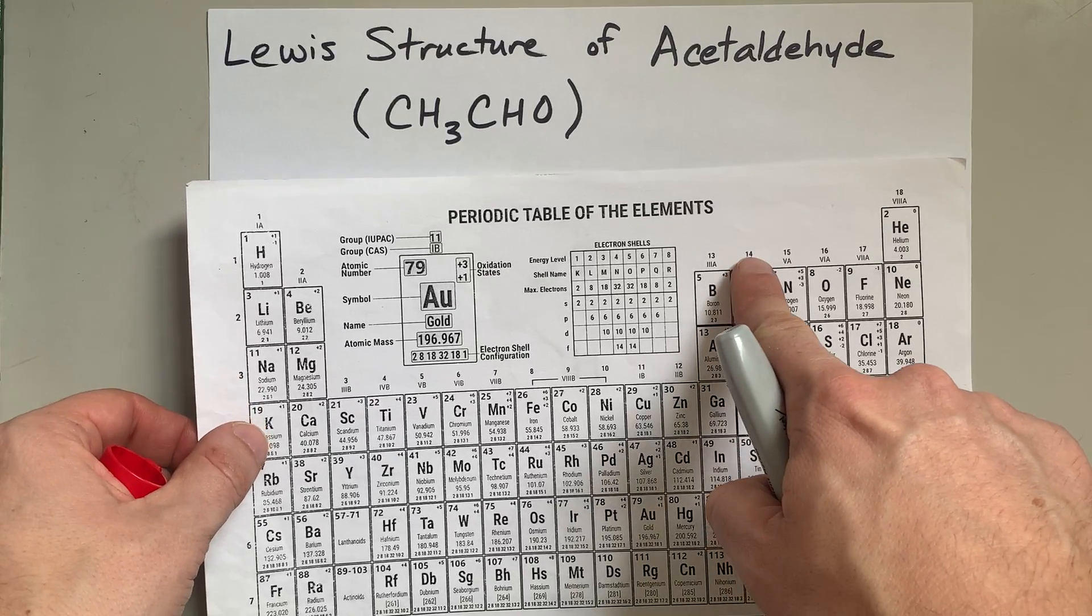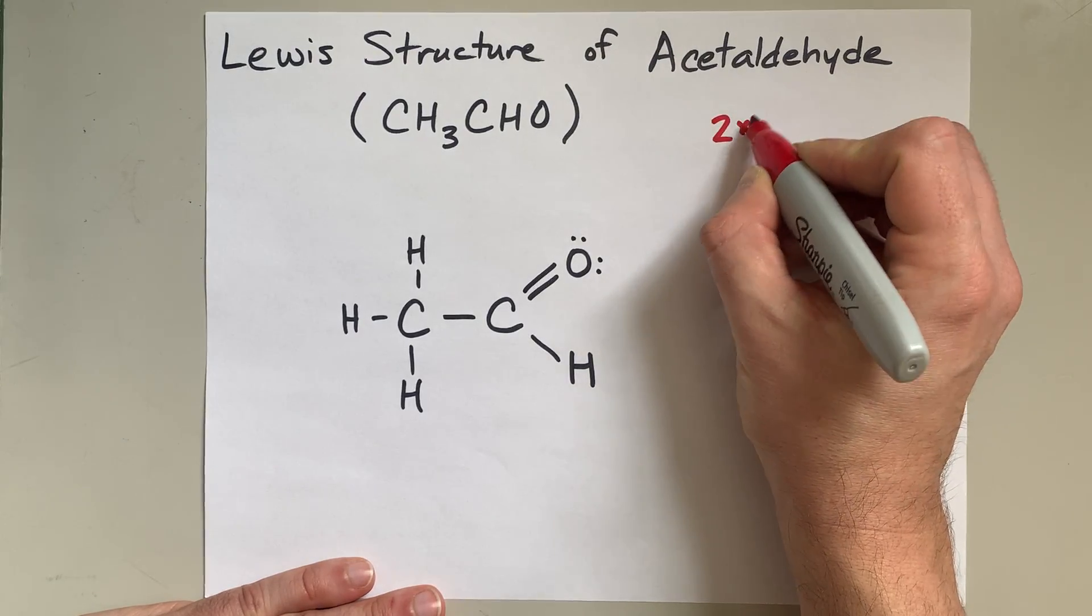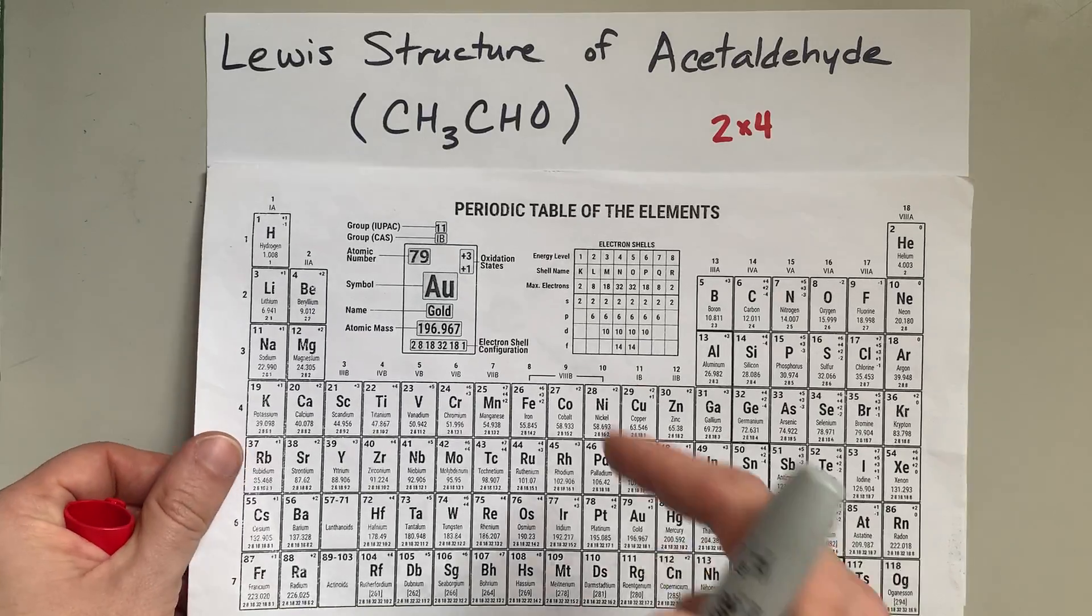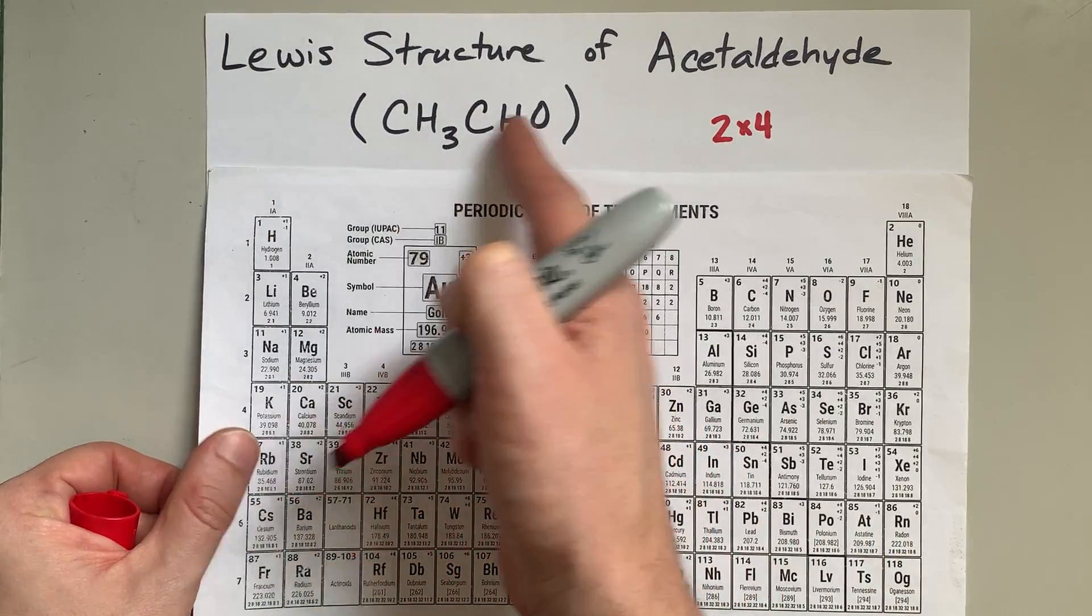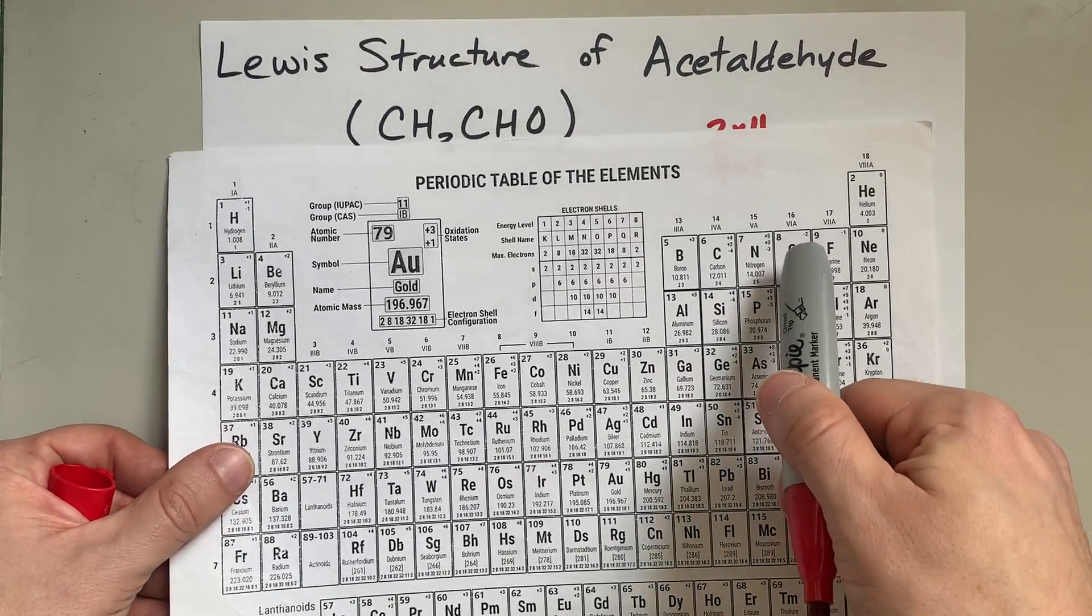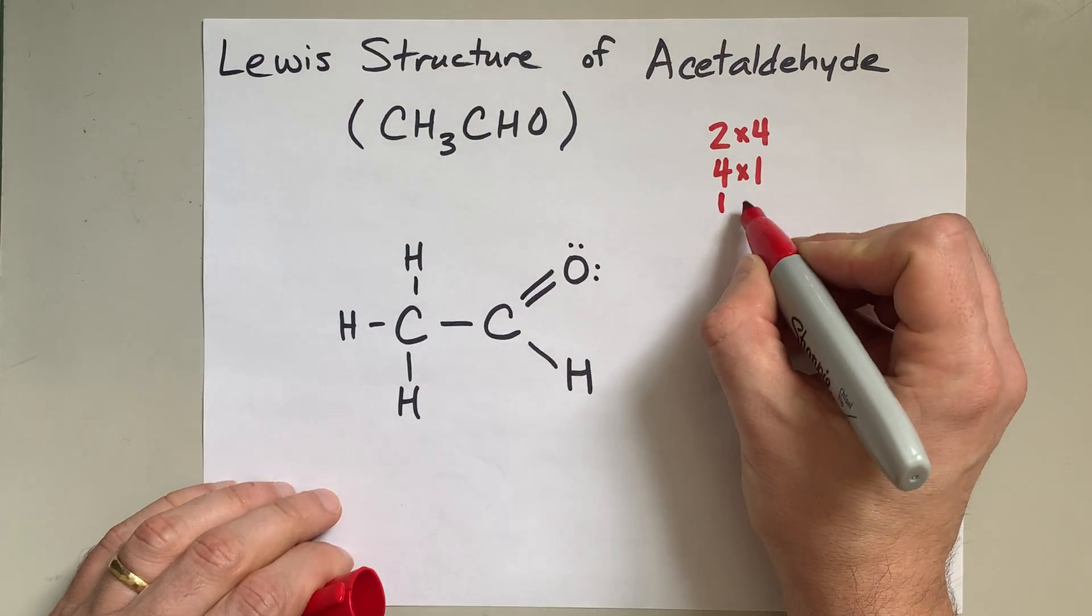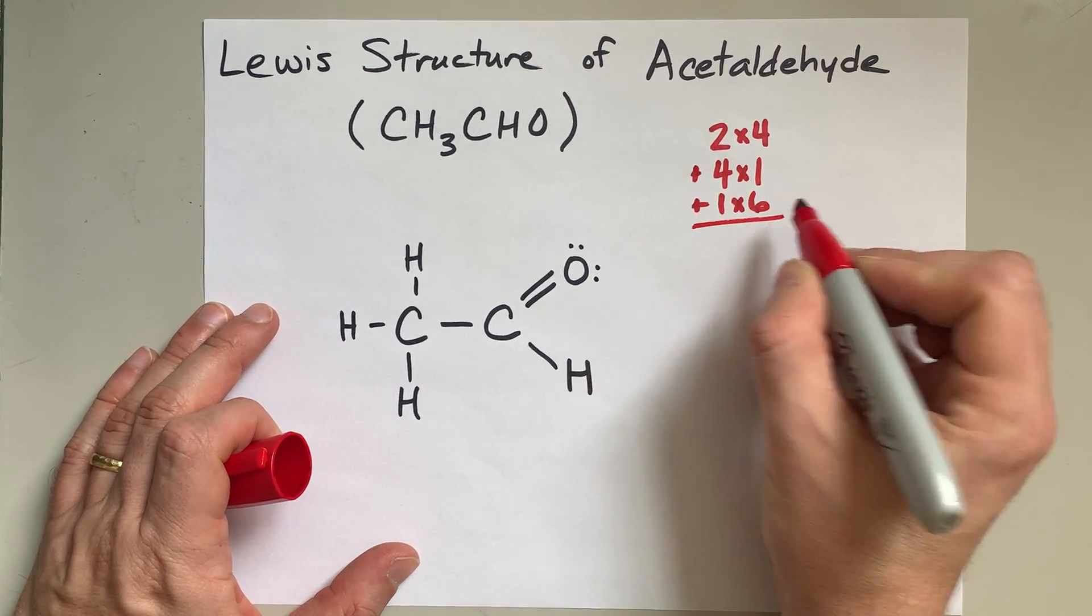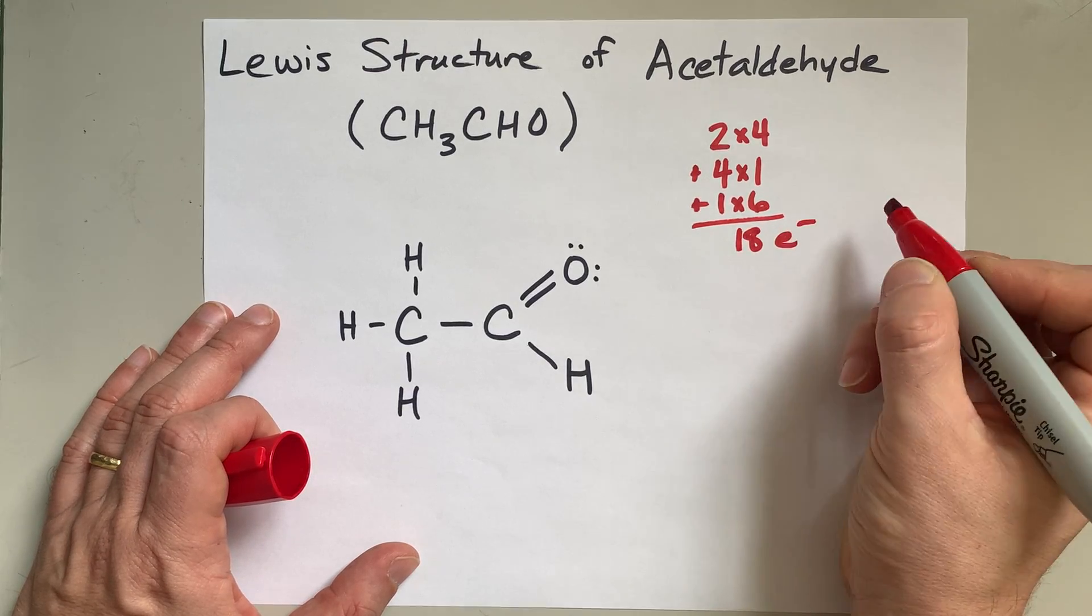Each carbon brings four valence electrons with it, and there's two carbons here. So two carbons, four electrons each. Hydrogen brings one valence electron with it. There's four of them here, so that's four atoms bringing one each. And oxygen brings six valence electrons with it, so that's one atom bringing six electrons. When I add all these up, eight plus four plus six is 18 electrons.